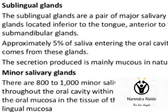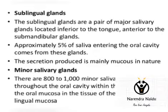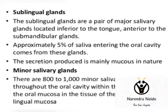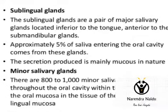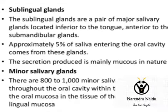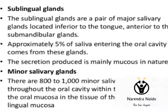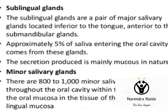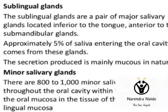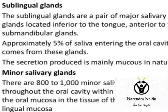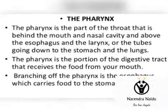There are also minor salivary glands. Around 800 to 1000 minor salivary glands are located in the oral cavity within the submucosa or oral mucosa, and also in the lingual mucosa.